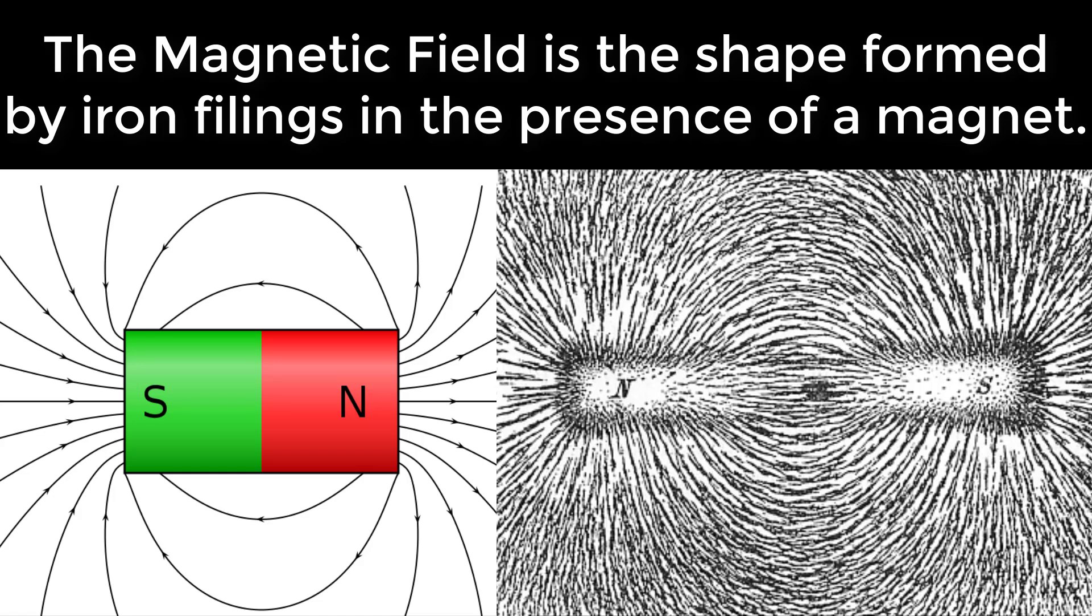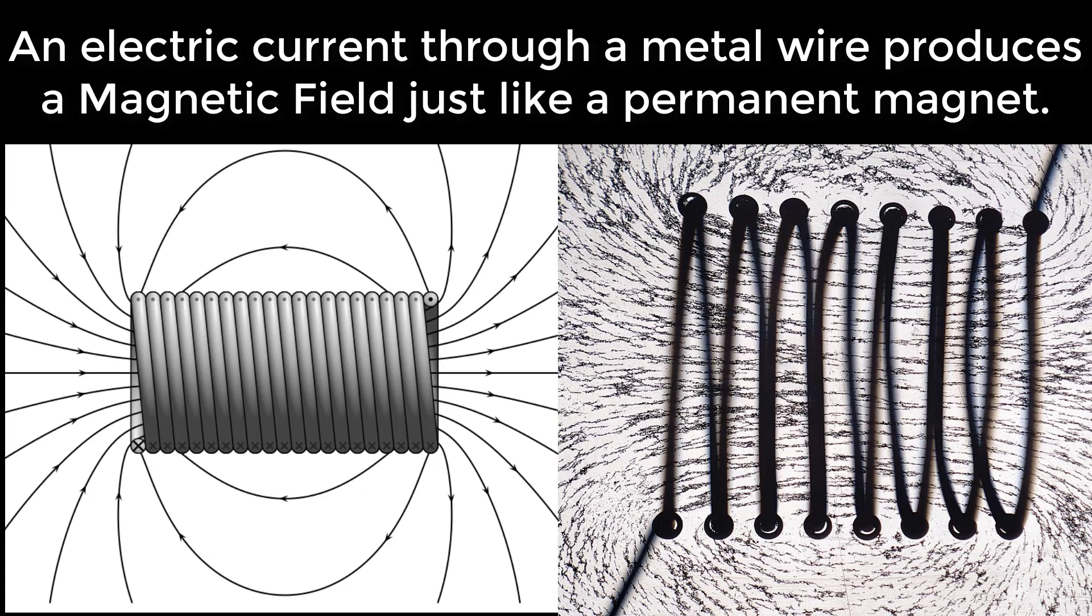The magnetic field is the shape formed by iron filings in the presence of a magnet. An electric current through a metal wire produces a magnetic field just like a permanent magnet.